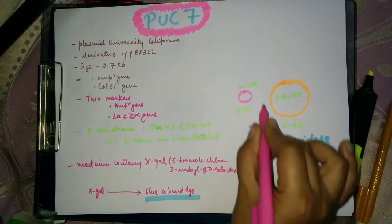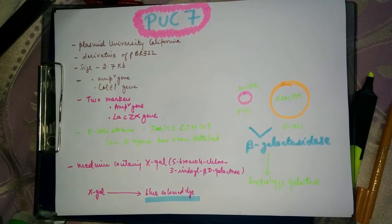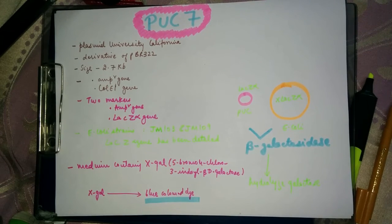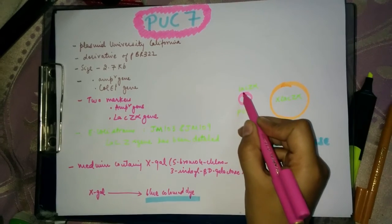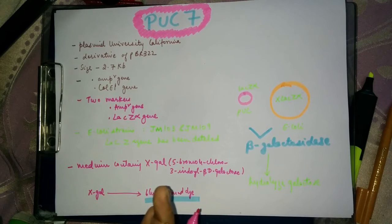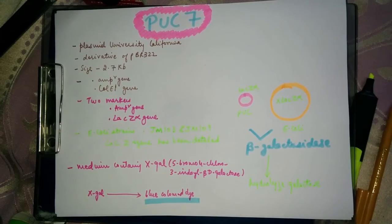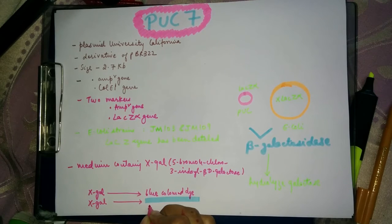If blue colored colonies are obtained, this means the E. coli cells have been transformed with the PUC vector. There is a polylinker sequence located within the lac Z alpha region which provides several unique restriction sites for DNA insertion. This polylinker sequence itself does not interfere with lac Z alpha expression, but when a DNA insert is placed within it, the lac Z alpha expression is prevented. So if we insert our DNA fragment into the polylinker region, the lac Z alpha gene of the PUC vector becomes inactivated, and white colonies are produced on X-gal medium.